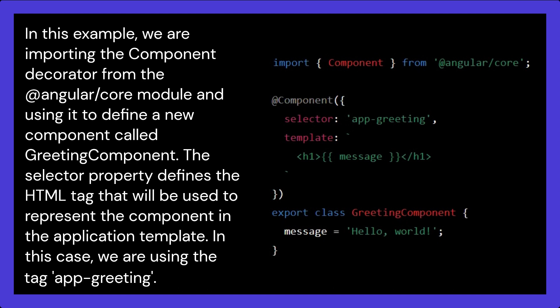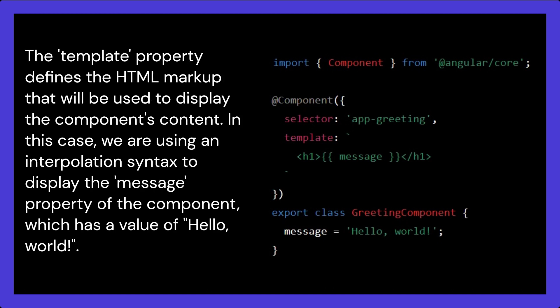The selector property defines the HTML tag that will be used to represent the component in the application template. In this case, we are using the tag app-greeting. The template property defines the HTML markup that will be used to display the component's content. In this case, we are using an interpolation syntax to display the message property of the component, which has a value of 'Hello, World'.